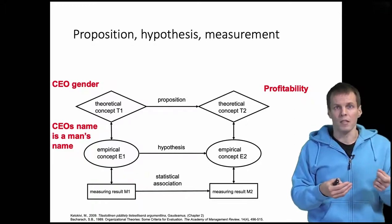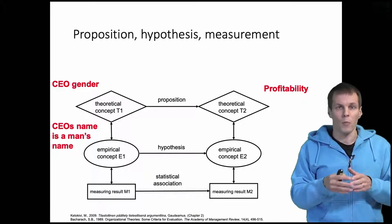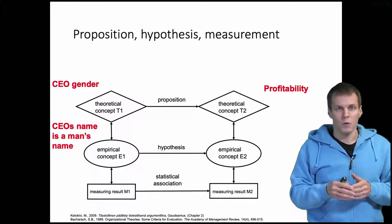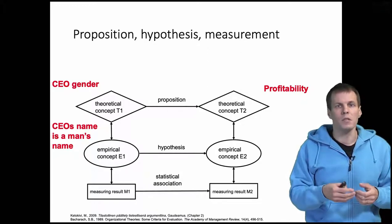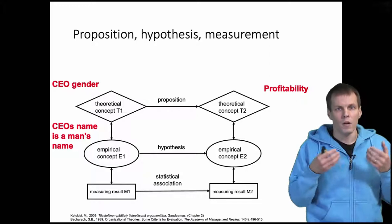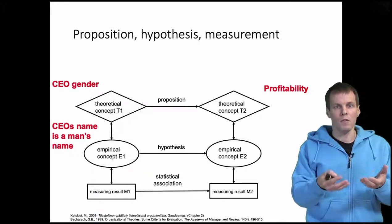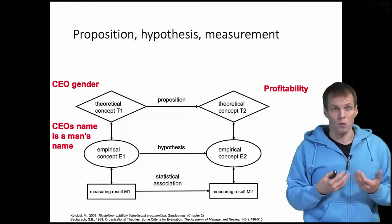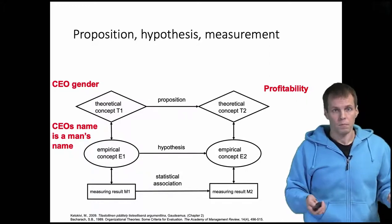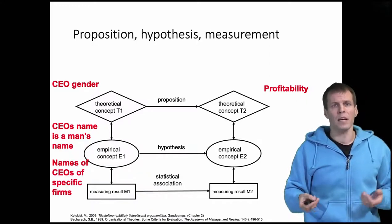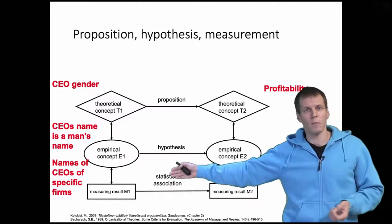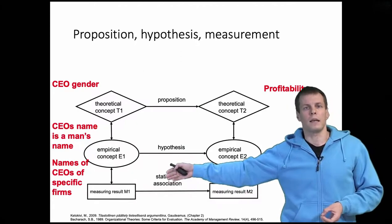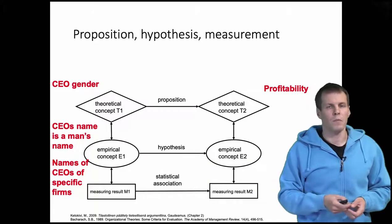Whether that rule is entirely reliable and entirely valid is probably not guaranteed, because some names can be used for both genders. So there is a bit of unreliability — there is randomness in how a person evaluates them, and also names from different countries might be difficult to evaluate. So we get some data about specific companies through this measurement process, and then we evaluate it.